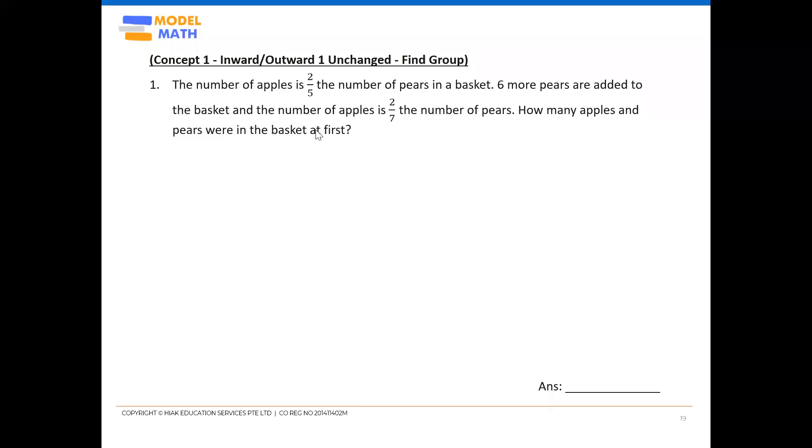The number of apples is two-fifths the number of pears in the basket. Six more pears are added to the basket, and the number of apples is two-sevenths the number of pears. How many apples and pears were in the basket at first?